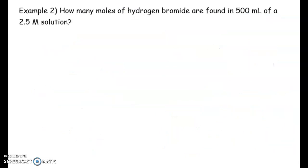Let's look at another example. How many moles of hydrogen bromide, HBr are found in 500 milliliters of a 2.5 mole per liter solution? So first of all, we're looking for the number of moles. We have the volume.